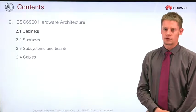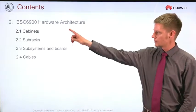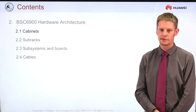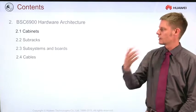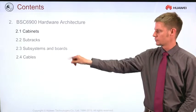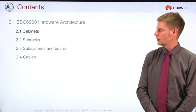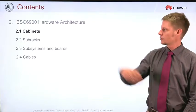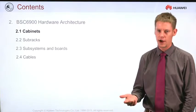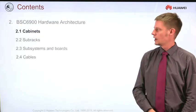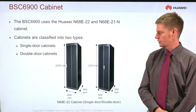In this course we will cover the cabinet and the subrack structure of the BSC 6900, and in another one we will cover the subsystems, boards, and the cabling. So first of all we will start with the cabinets, which are also called racks, and we can have one or two of these cabinets.